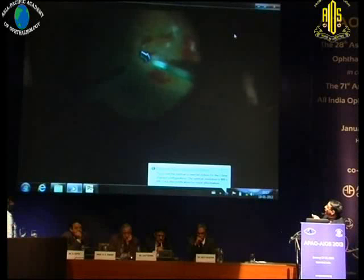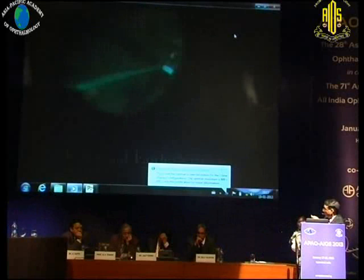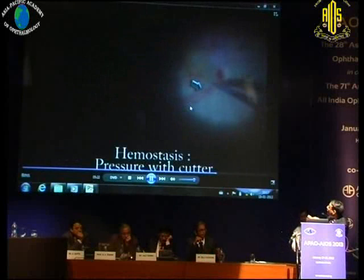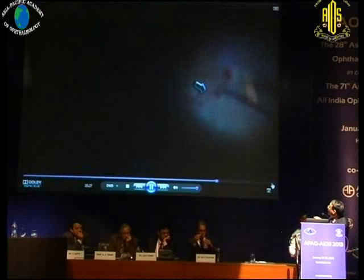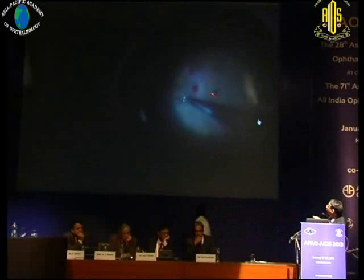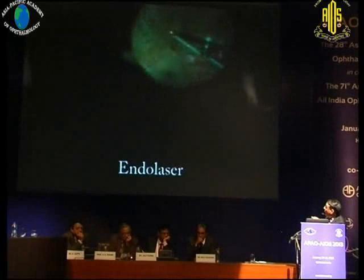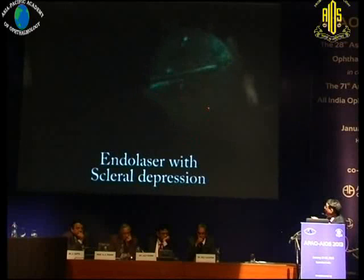Hemostasis — sometimes you have persistent troublesome bleeders that don't stop even when you elevate the bottle, and you don't want to do that for too long. We use a combination of passive extrusion with the cautery, and also pressure from the cutter directly over the bleeder. If you just press over the bleeder and stay there for about a minute and a half to two minutes, the bleeding will stop in many cases. That's better for the nerve than raising the bottle height too much.